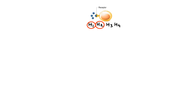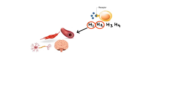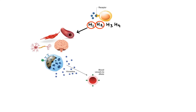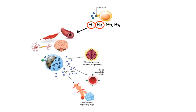H1 receptors are expressed primarily on vascular endothelial cells, smooth muscle cells, as well as in the brain and on peripheral nerve endings. These receptors mediate mainly inflammatory and allergic reactions. When histamine binds to vascular endothelial receptors, it causes blood vessels to dilate, making them more permeable, ultimately leading to redness and edema. When histamine binds to smooth muscle receptors, particularly those in bronchioles, it causes bronchoconstriction. Histamine also acts as a neurotransmitter within the central nervous system, where H1 receptor binding promotes wakefulness and appetite suppression. Lastly, histamine-mediated stimulation of peripheral nerve endings leads to pain and itching sensations.